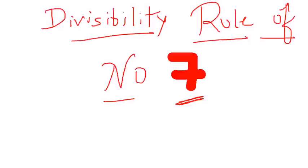Hello friends, I am Sunish from TeamMust and in this video we'll see the divisibility rule of the number 7. We'll check whether a given number is divisible by 7 or not. If it is divisible then that's great, and if it isn't, we'll find the exact remainder. So let's start with examples.